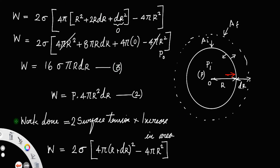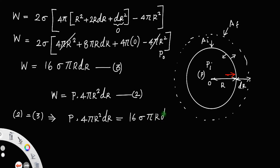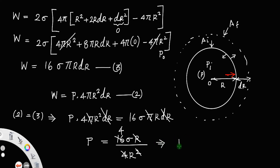Now, equations 2 and 3 both represent the work done. Equating them: P × 4πr²·dr = 16σπr·dr. Cancelling dr and π from both sides: P = 16σr / 4r² = 4σ / r. So the final equation is: excess pressure P = 4σ / r.